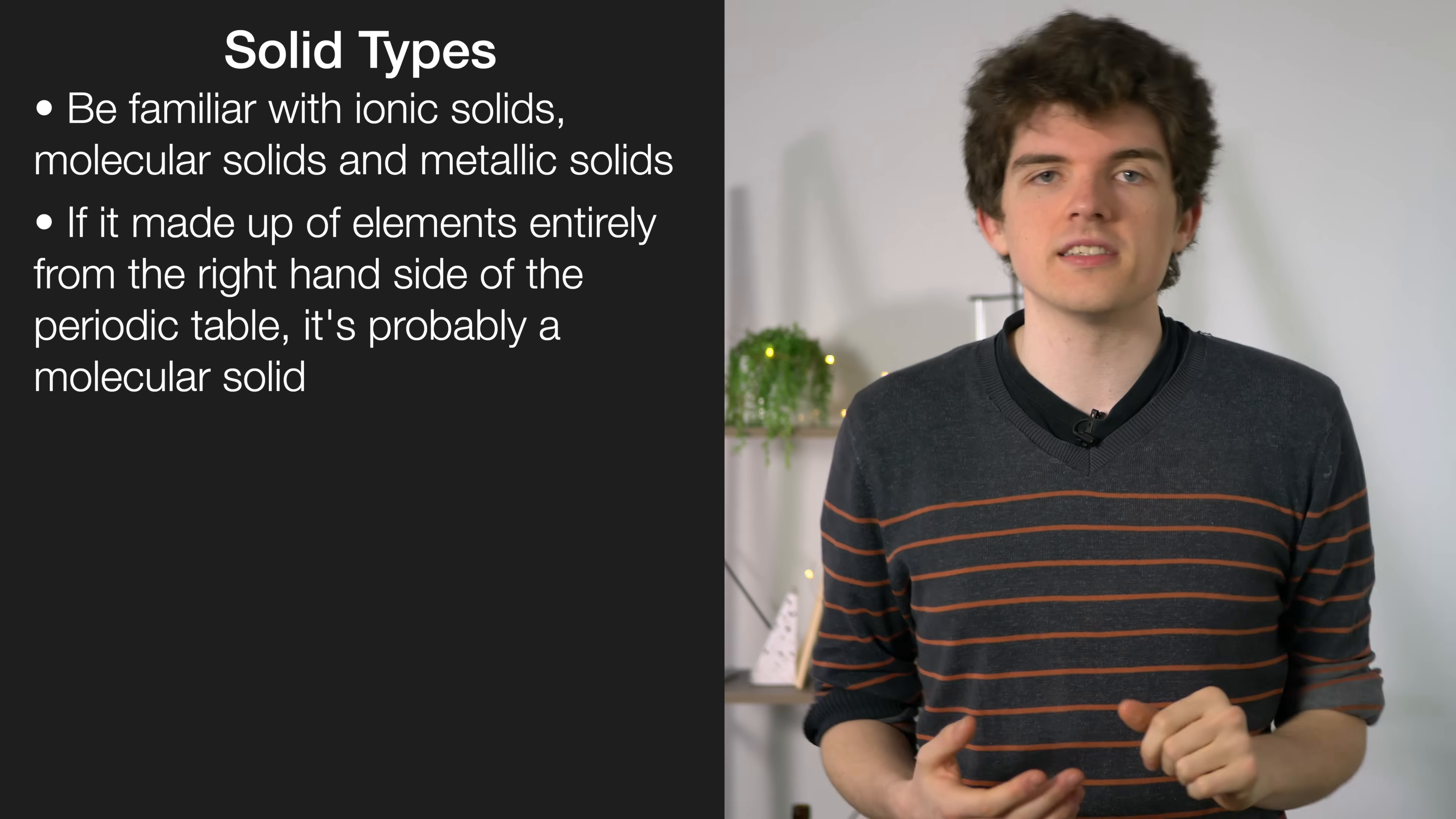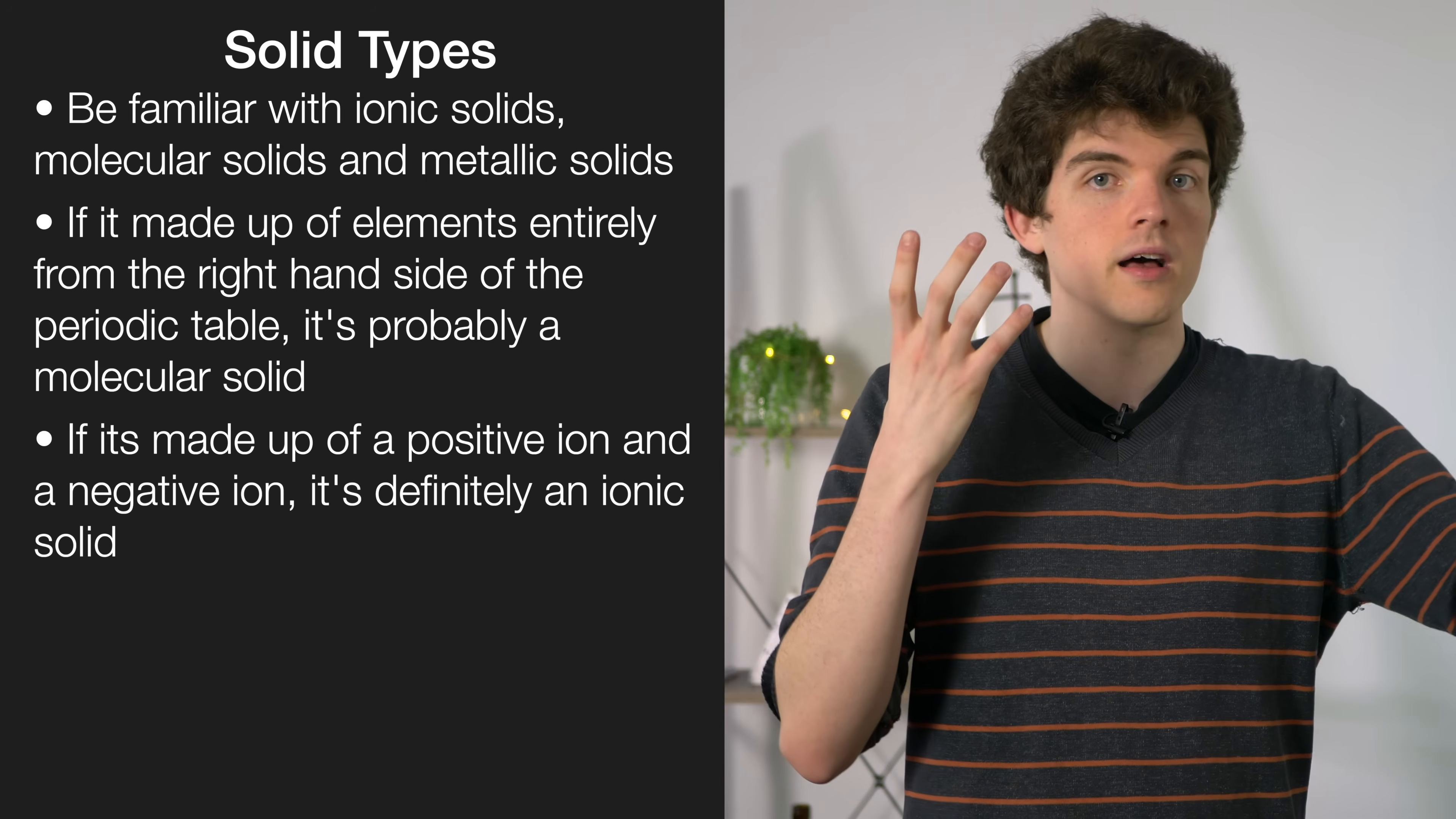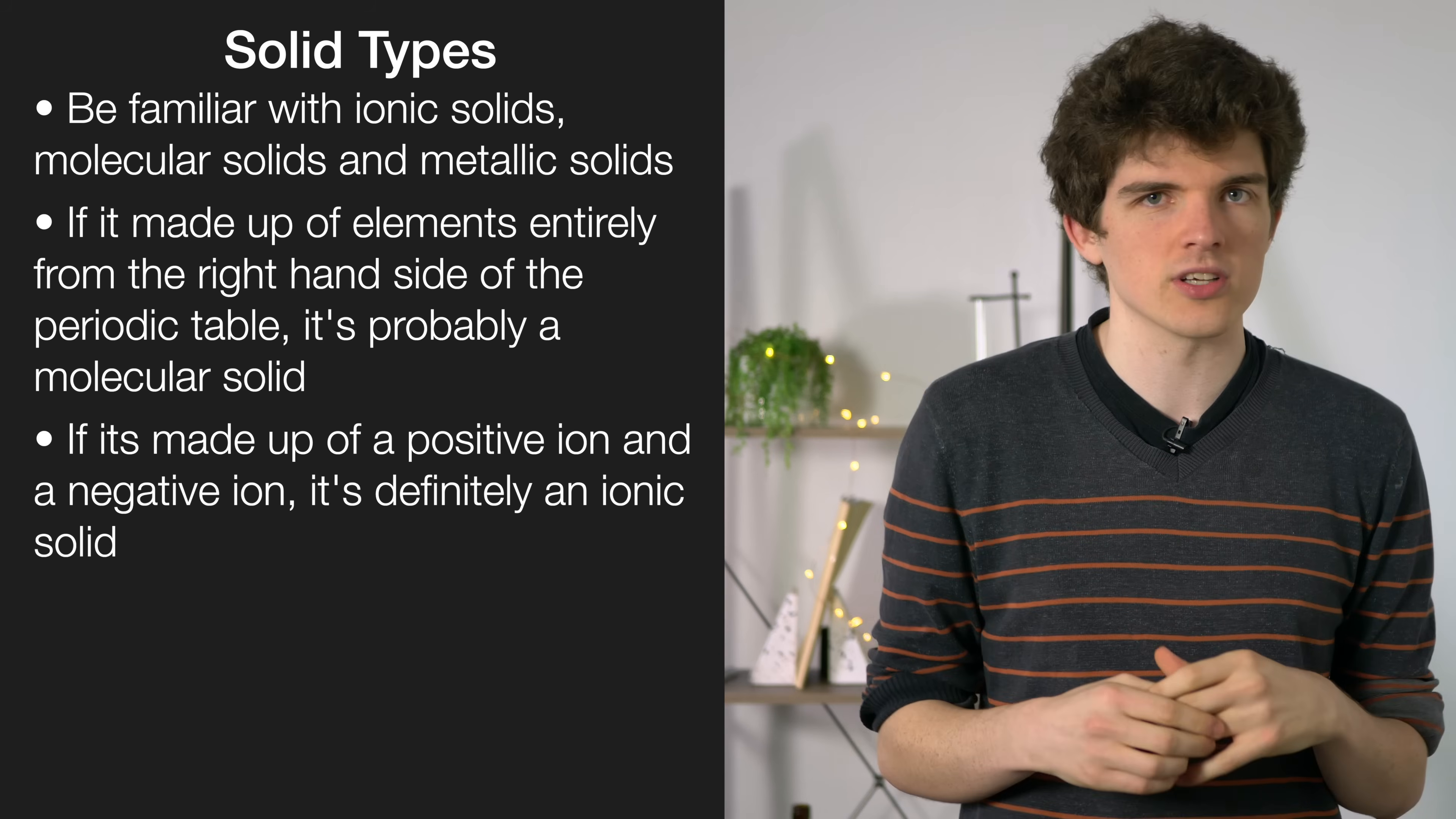You'll be familiar from Level 1 acids and bases with your table of ions. So if you see something made up of two separate ions, like a positive ion and a negative ion, that's definitely an ionic solid.